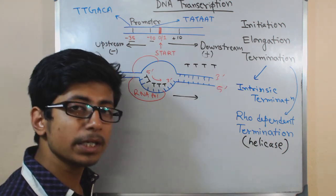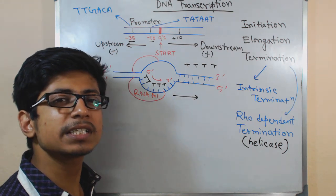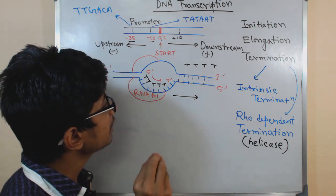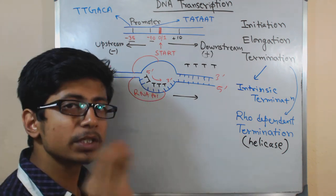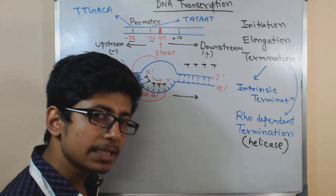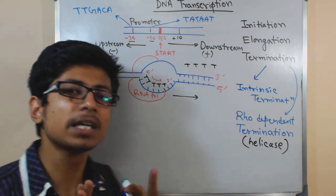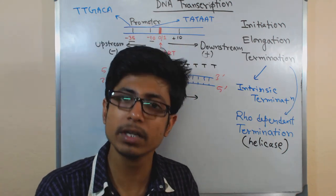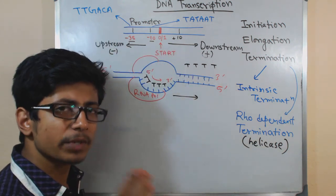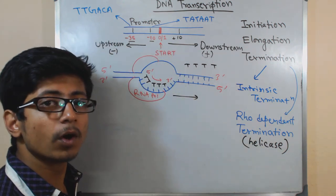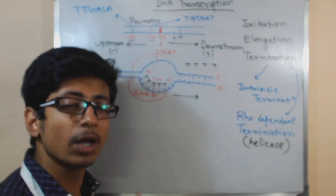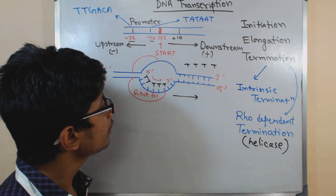For any kind of termination, there should be a termination signal. Remember, there is a proper termination signal present in the DNA — just like the promoter which contains the start site or initiation site of DNA transcription. In the similar way, there is a sequence stretch designated for the termination of transcription inside the DNA.